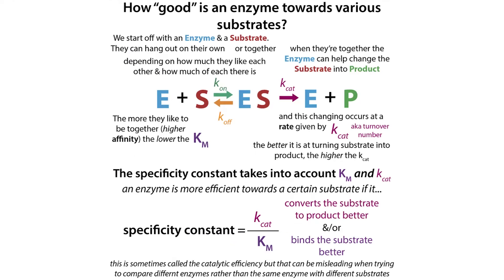If you want to think about how good an enzyme is for a substrate, we need to consider both the Km and the Kcat. We have a value that does this — the specificity constant, sometimes called the catalytic efficiency — which is Kcat over Km. If we have weak binding, we're going to have a big Km, making our specificity constant lower. If we have tight binding, Km is smaller, making our specificity constant bigger. If we're better at turning things over, our Kcat is bigger, and since it's on top, our specificity constant is bigger as well.